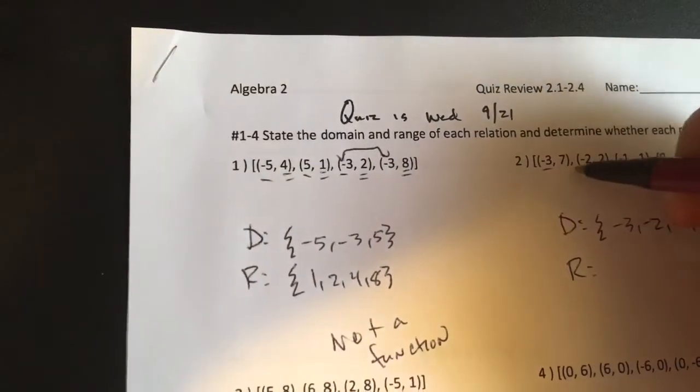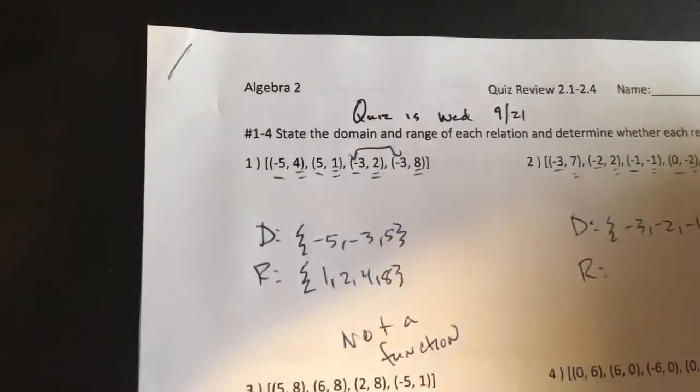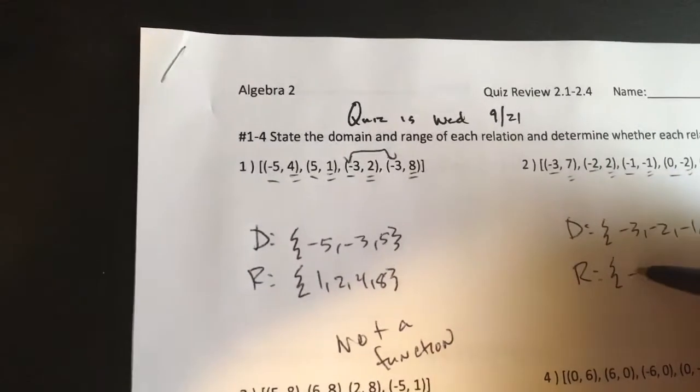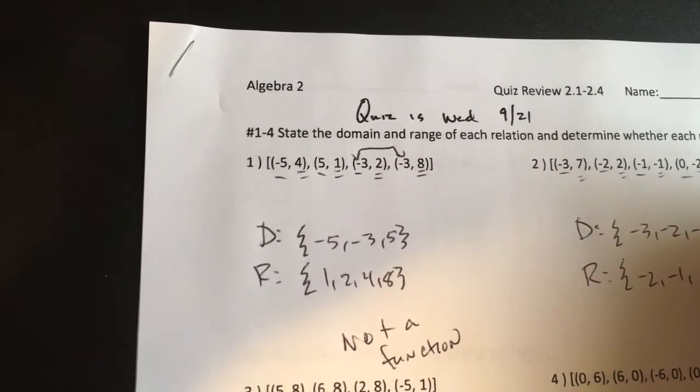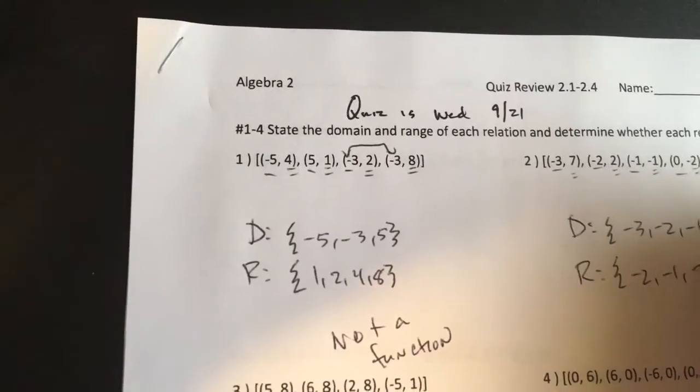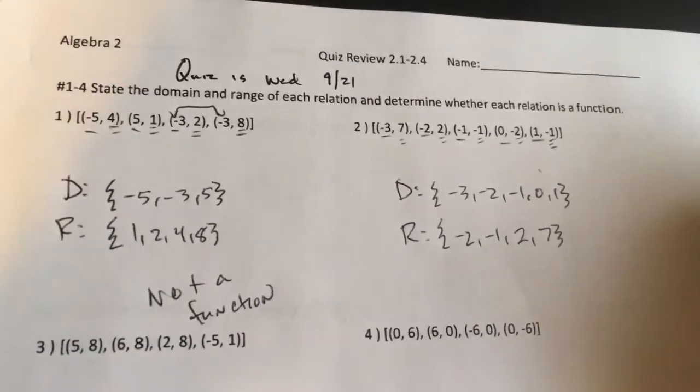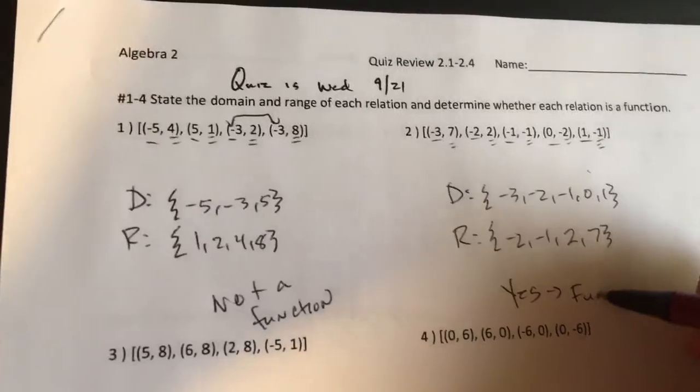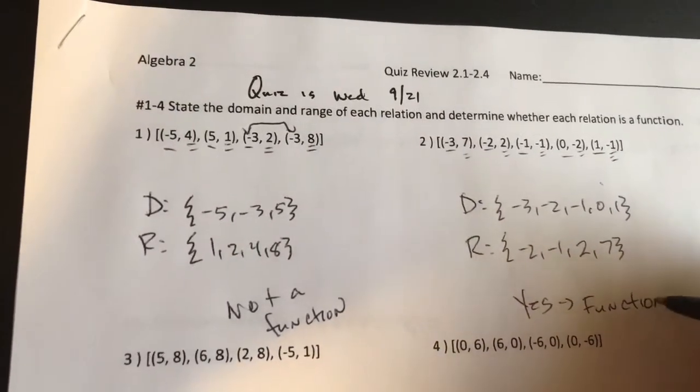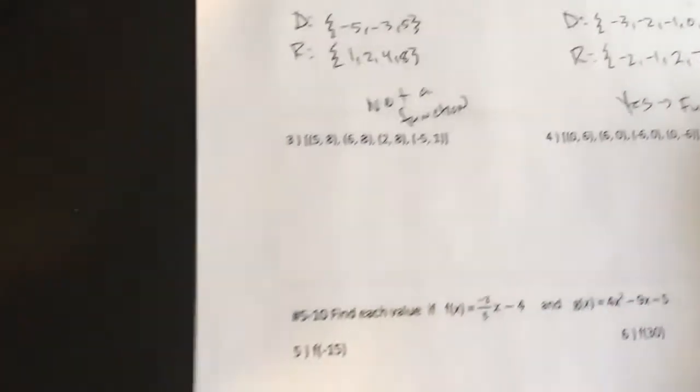All right. And for the range, all the y values, we got 7. We got 2. We got negative 1. We got negative 2. We got another negative 1. All right. So negative 2, negative 1, I believe we have 2 and 7. Now, I don't have any duplicate x's. So this is a function. It's not 1 to 1 because we have 1 y getting paired with 2 x's. That is a function.